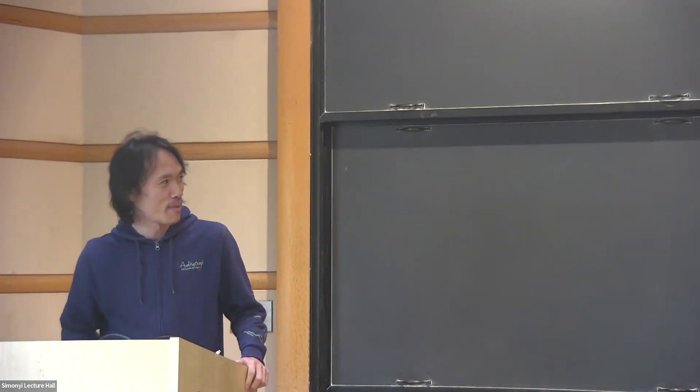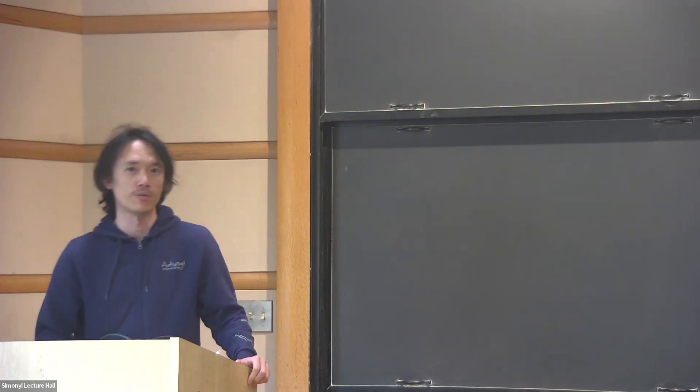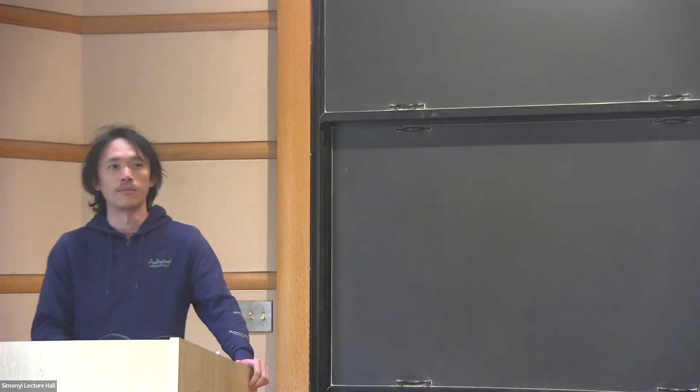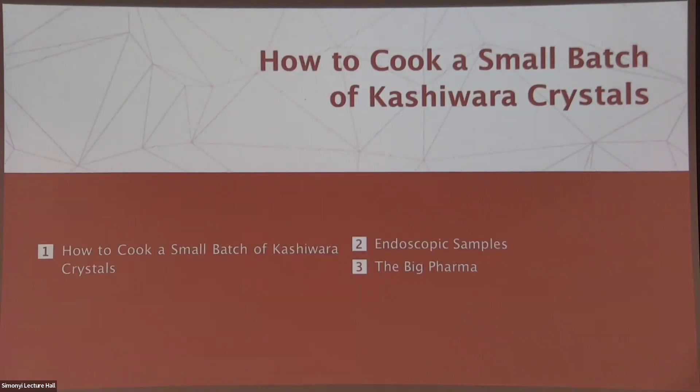This talk is about the relationship between a combinatorial object called the Kashiwara crystals and the endoscopy phenomena in number theory. Accident means I found this by accident. Okay, so let's start by cooking some Kashiwara crystal first.